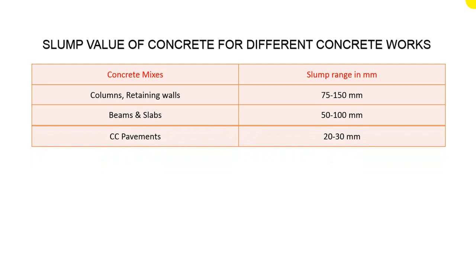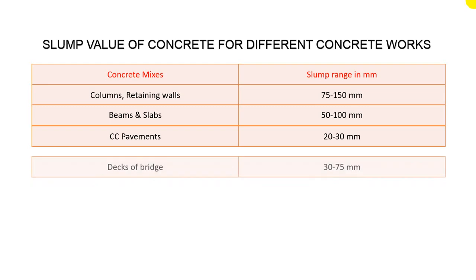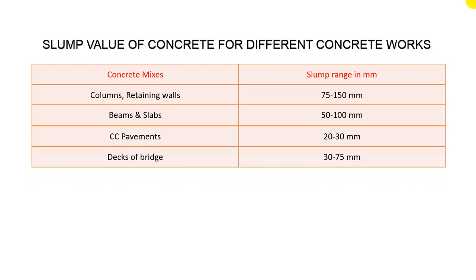For CC pavement — cement concrete pavement — the slump value should be 20 to 30 millimeters. So for cement concrete pavement, we will provide 20 to 30 millimeters of slump.